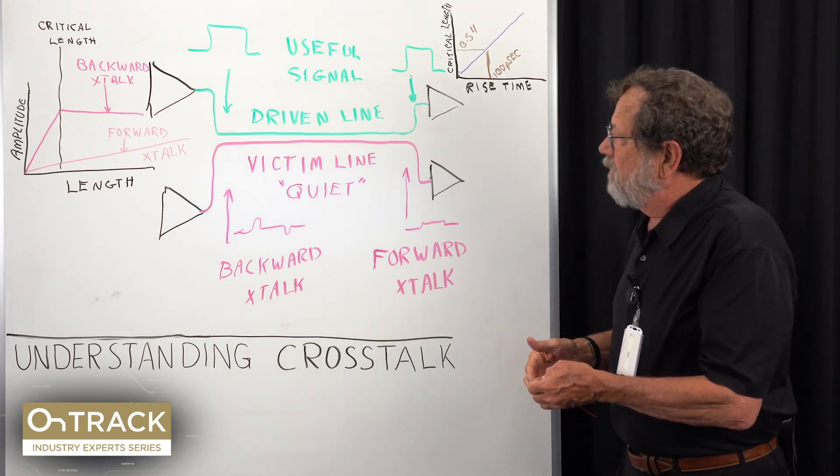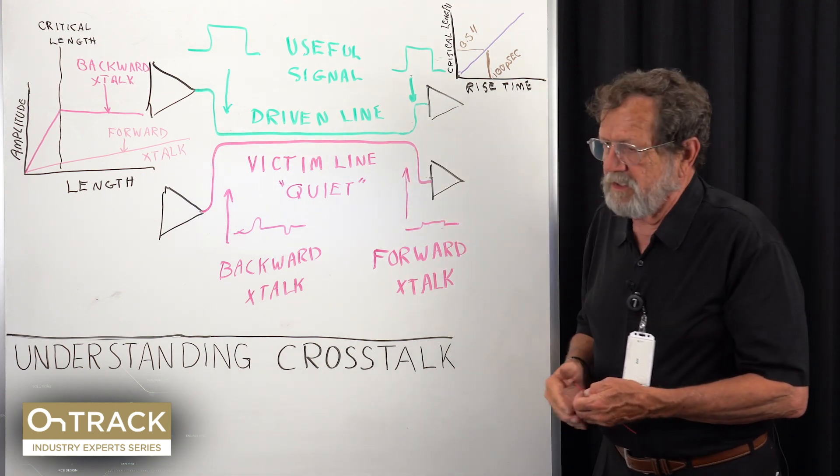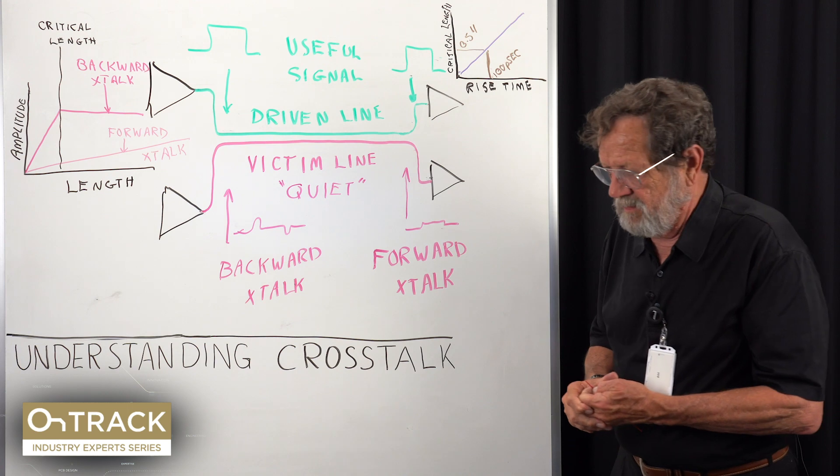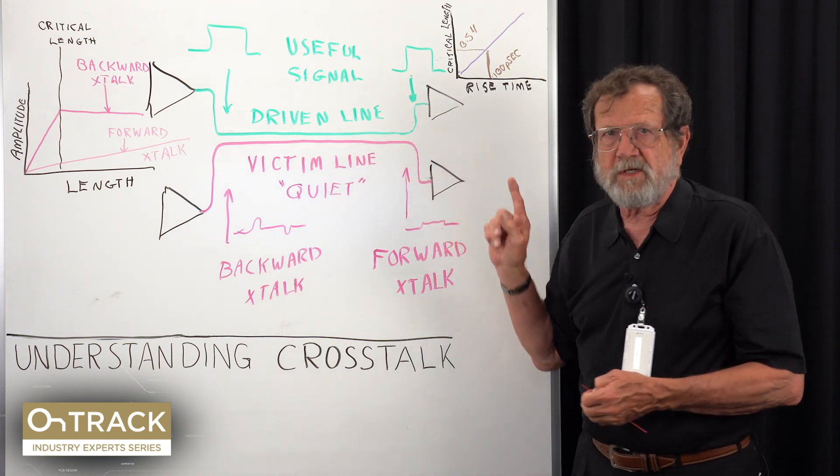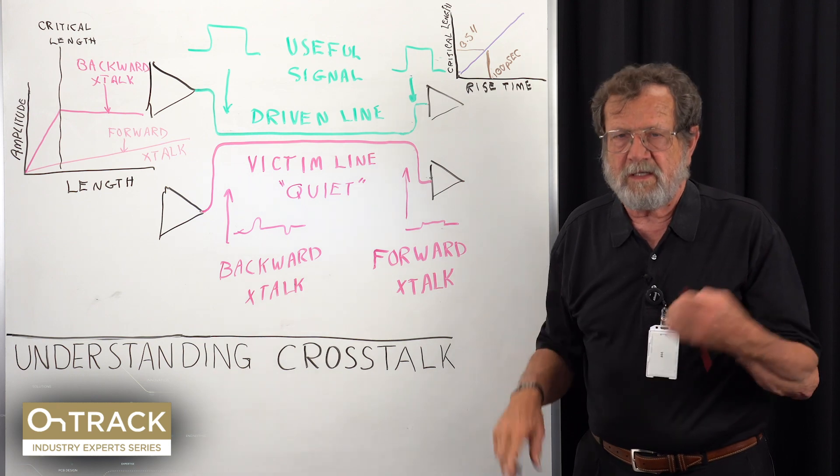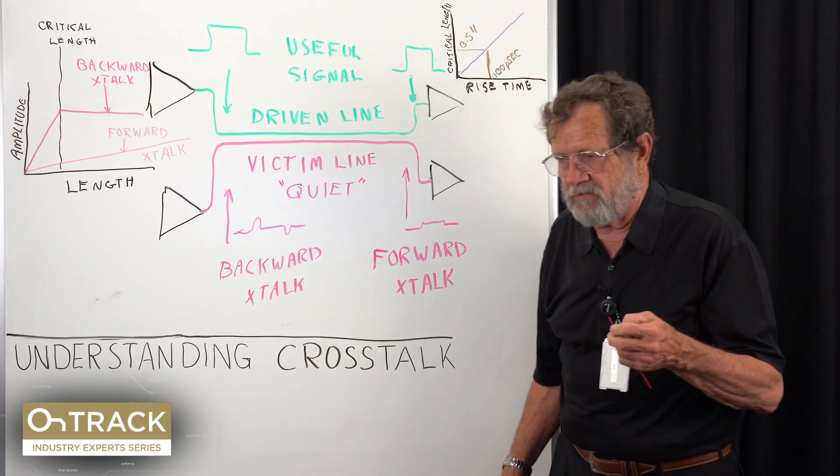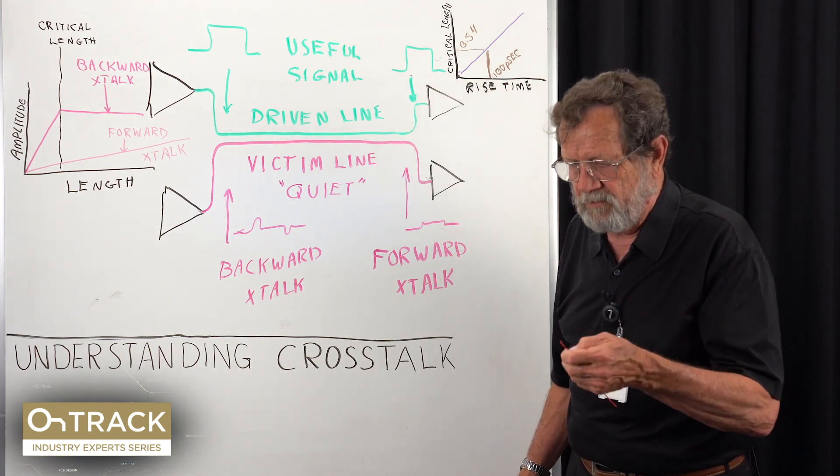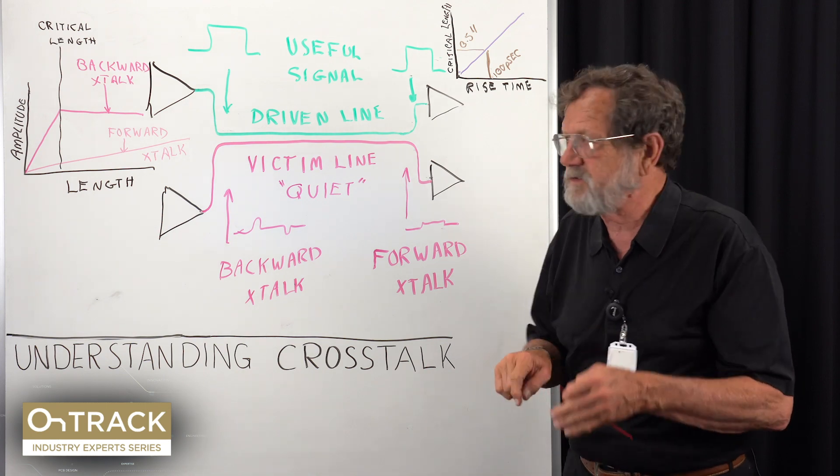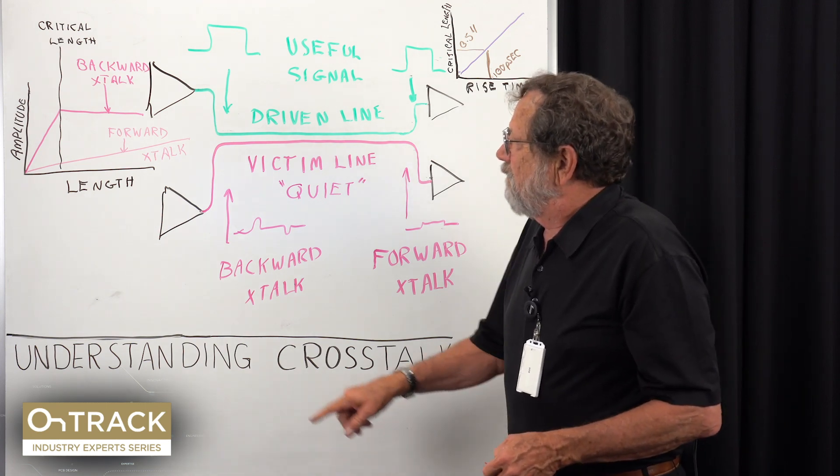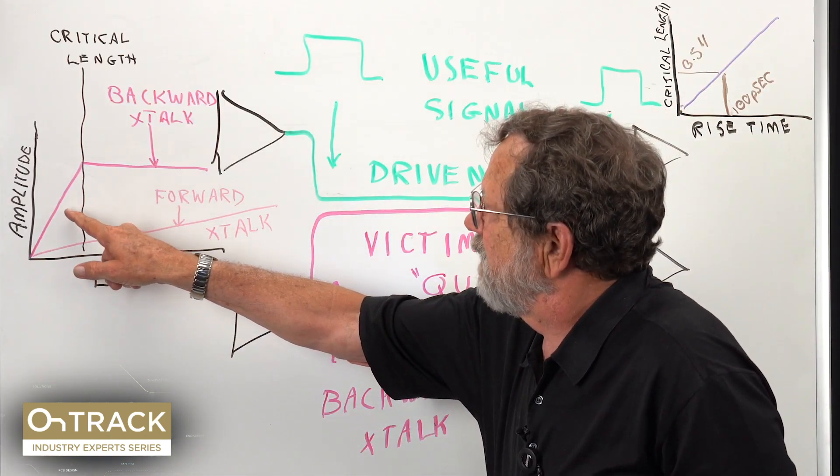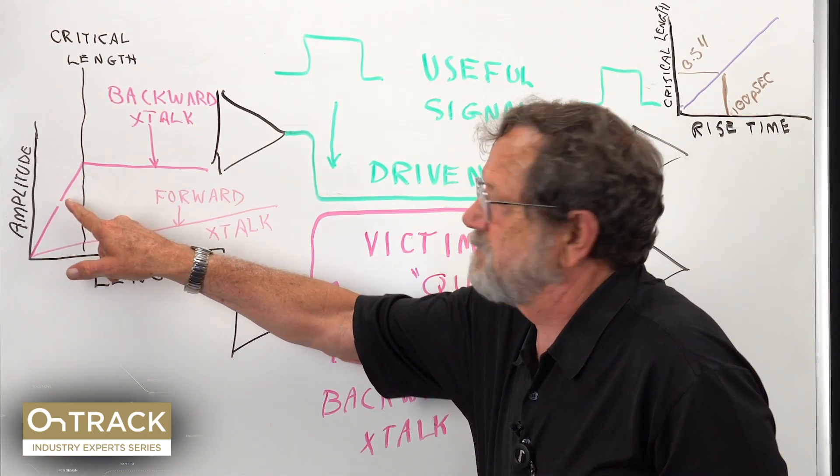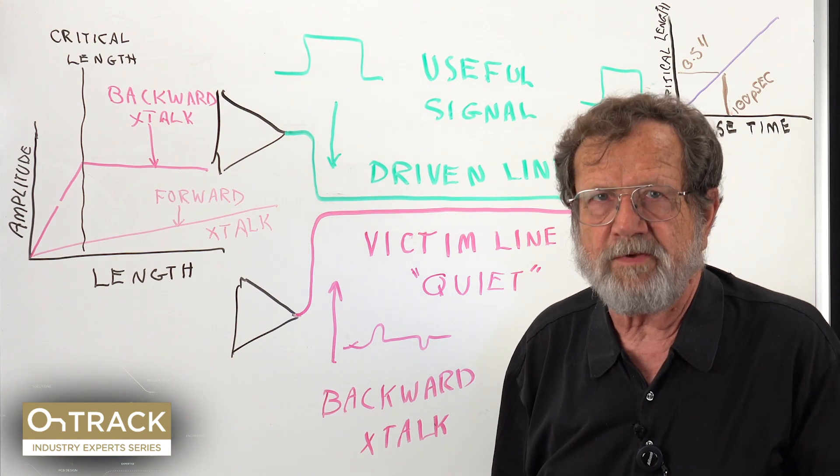So how do we limit the amount of crosstalk? One thing that is proposed is to limit the length at which you run side by side, and this Altium tool has a control where you can put in a variable that says no longer than X number of mils. Implied in that statement is you're going to stop running side by side while you're down on this slope someplace.